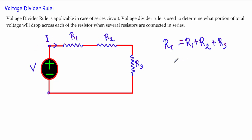Now if I want to calculate the total current — that is, the source current in this circuit — I will take I equal to the total supply voltage divided by the total resistance RT.